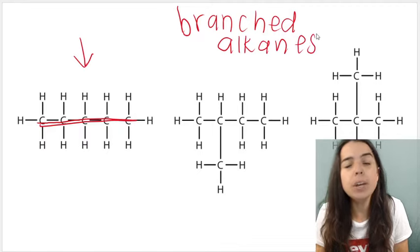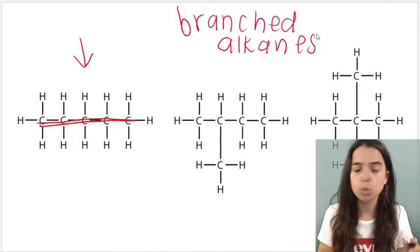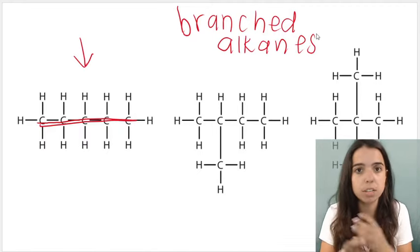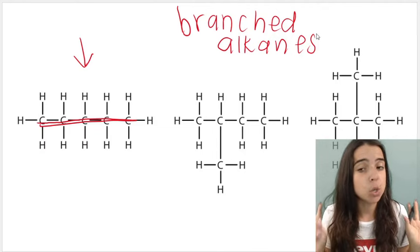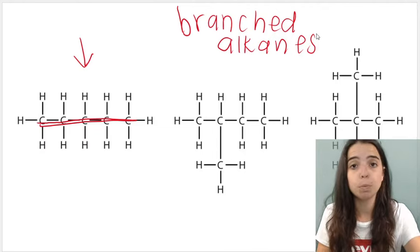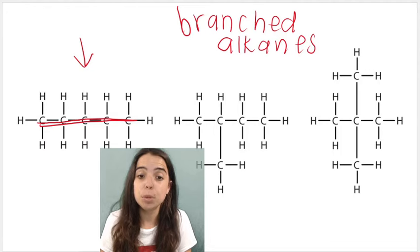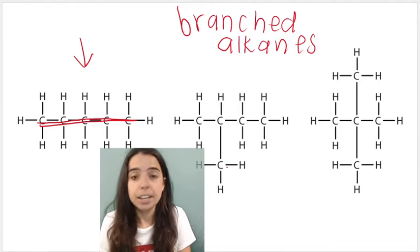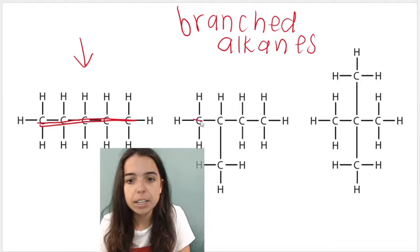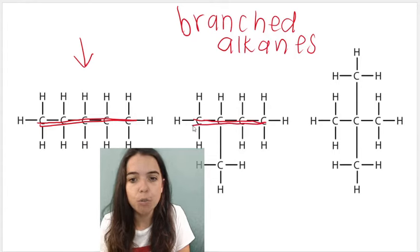Now the way we name branched alkanes or branched organic compounds in general is a bit different and we need to apply some rules. But I hope you can tell the difference between straight versus branched. Again, if we look at the middle alkane here, this is our main chain. It's got four carbons in it.